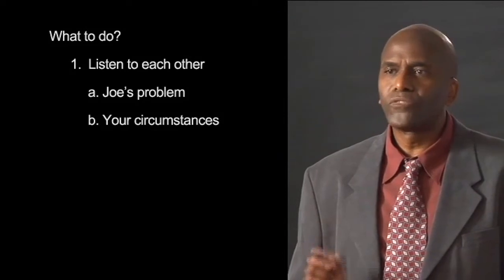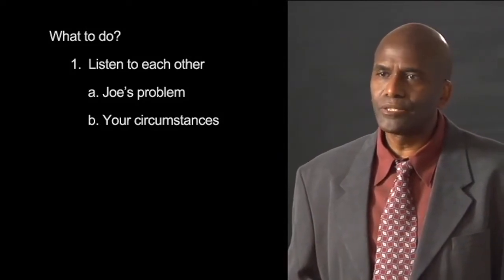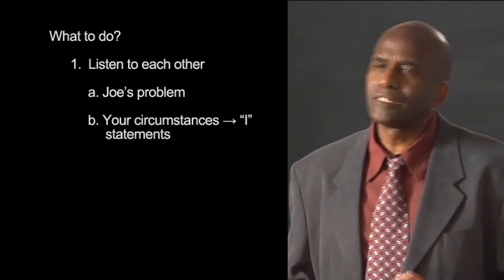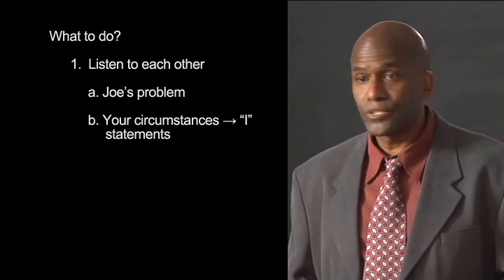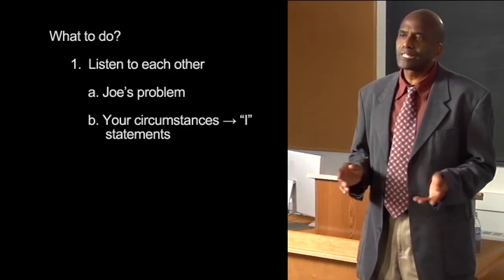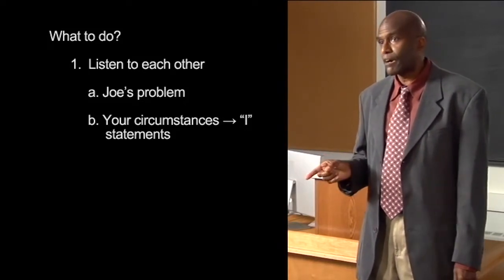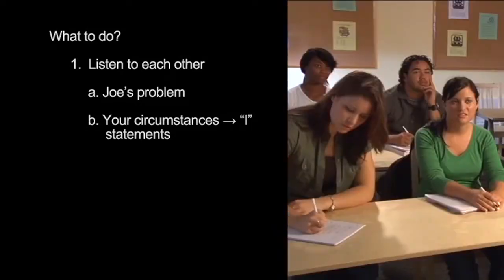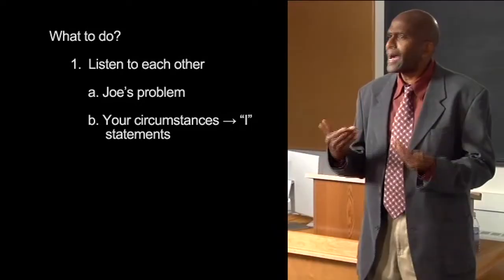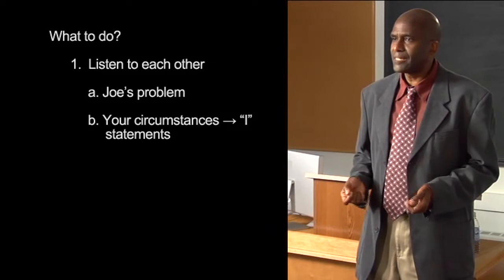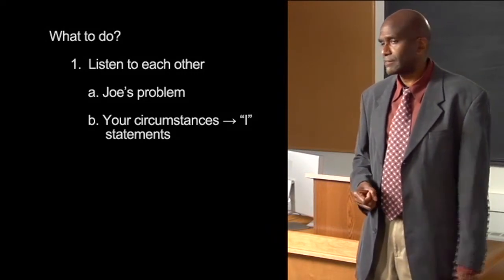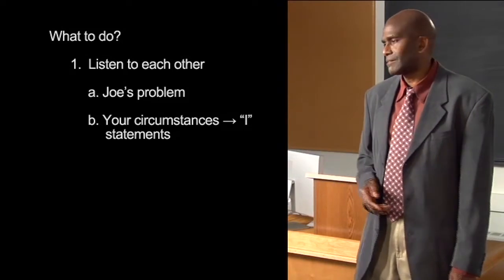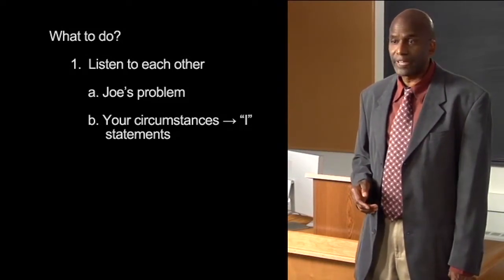One way to avoid blaming someone is to use I statements. That means you start sentences with the word I instead of you. So don't say to Joe you are causing us problems. That might make Joe angry. Instead you could say I am worried because the fabric is late and we can't make our clothing. This way you are explaining how you feel and how the problem affects you.